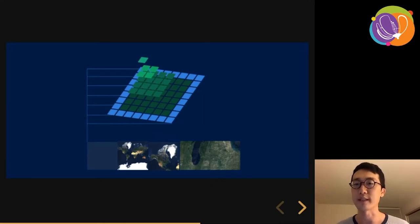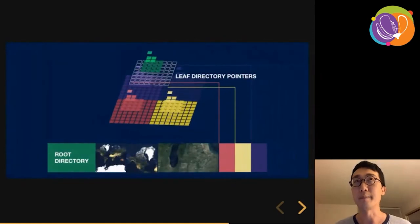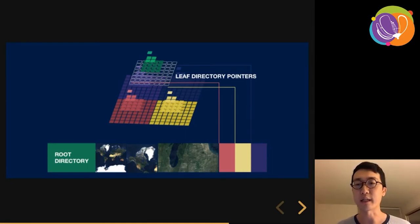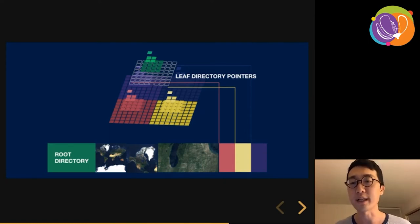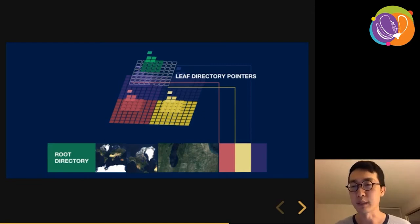The idea of recursive directories means that for archives with millions of tiles you don't need to download a single directory containing offset data for the entire archive. Instead it's organized with multiple levels like a tree. For example, if you're requesting a tile at zoom level 14, you start at the root directory. At zoom level 8, instead of pointing directly to a tile it points to a leaf directory, which contains all data for that subtree of the pyramid. This lets the range-based design scale to archives covering the entire world down to zoom levels 12, 13, or 14.